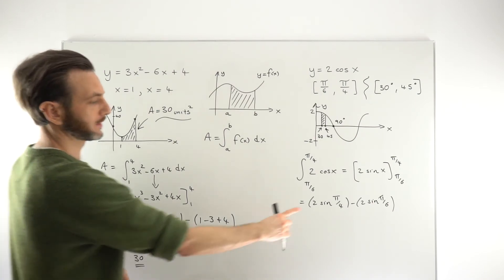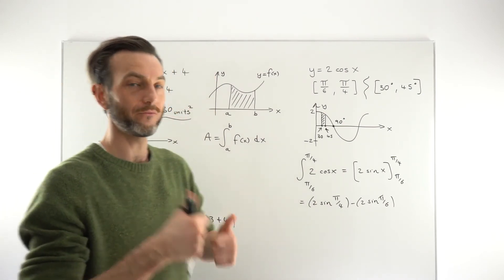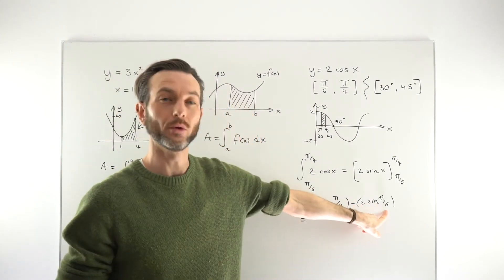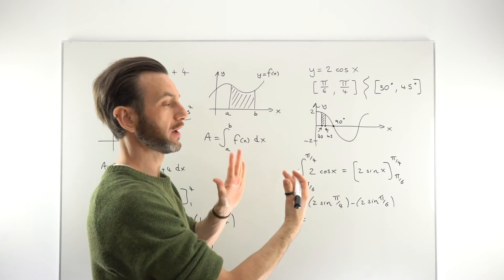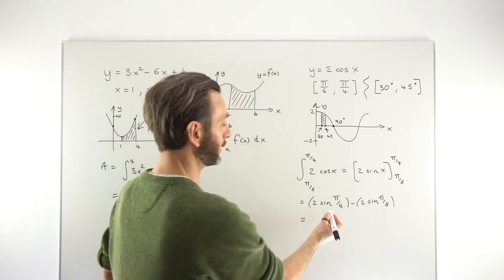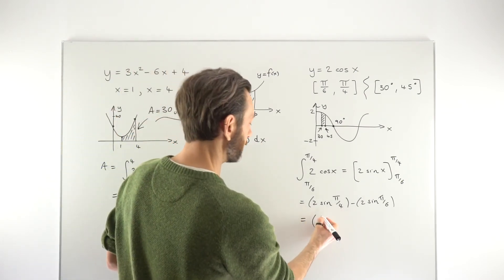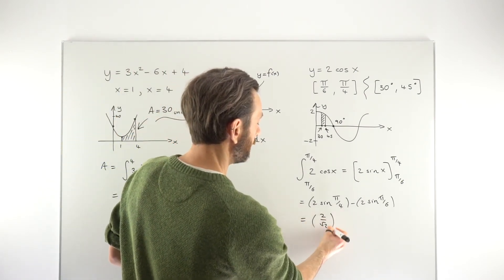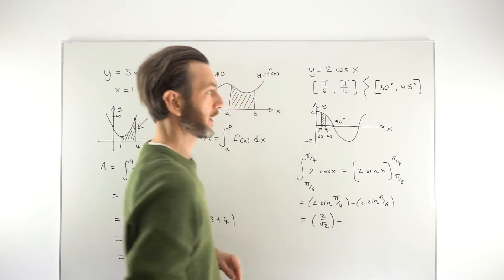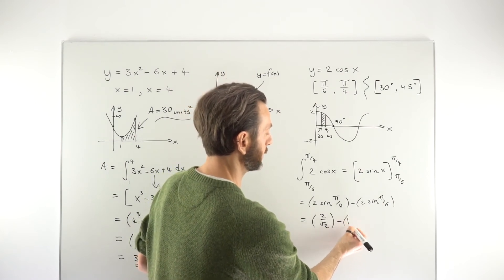So, if this was non-calculator, this will start to test your trig values a little. We're just subbing in the values. We get 2 sine of pi by 4 — replacing x with the upper limit — subtracting 2 sine of pi by 6, replacing x with the lower limit, just exactly as we did for the previous example. Using brackets is good practice to keep things separated. Then we just need to evaluate this. The sine of pi by 4 is 1 over root 2, meaning 2 times that is 2 over root 2. Pi by 6 is 30 degrees; the sine of 30 degrees is one half; 2 times one half is 1, so it's going to be minus 1.